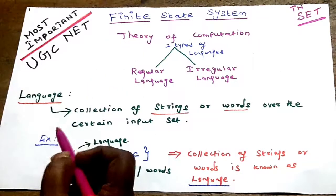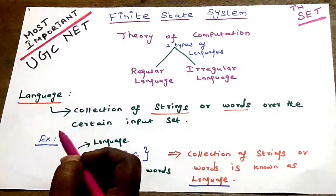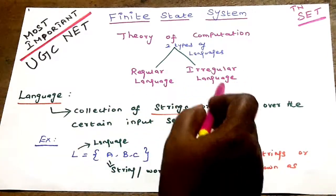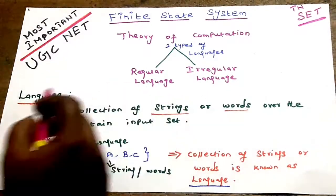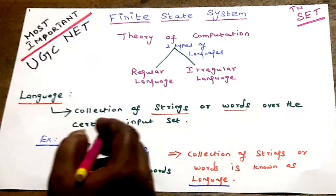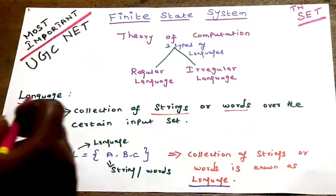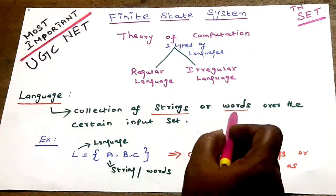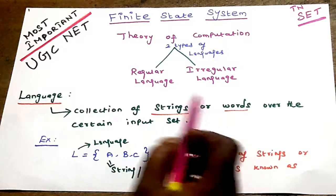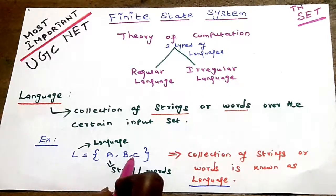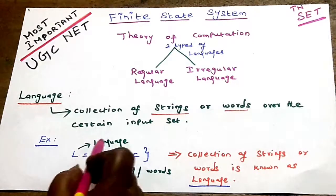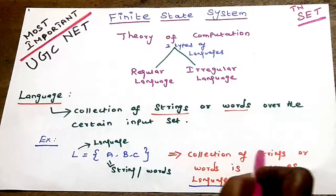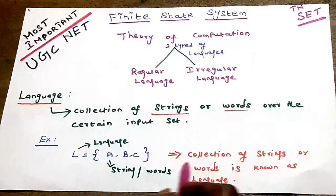First, finite state system. In general theory of computation, two types of languages are developed: one is regular language and another one is irregular language. Language means a collection of strings or words over a certain input set. For example, L equal to ABC — L means language, ABC means strings or words. Collection of strings or words is known as language.